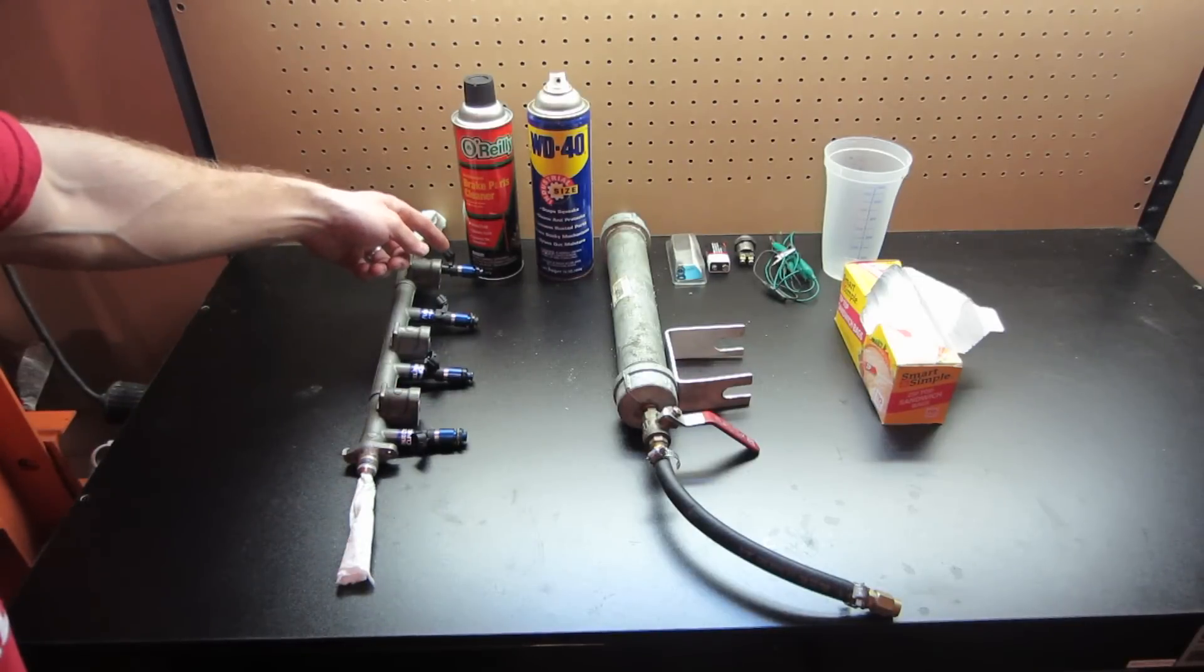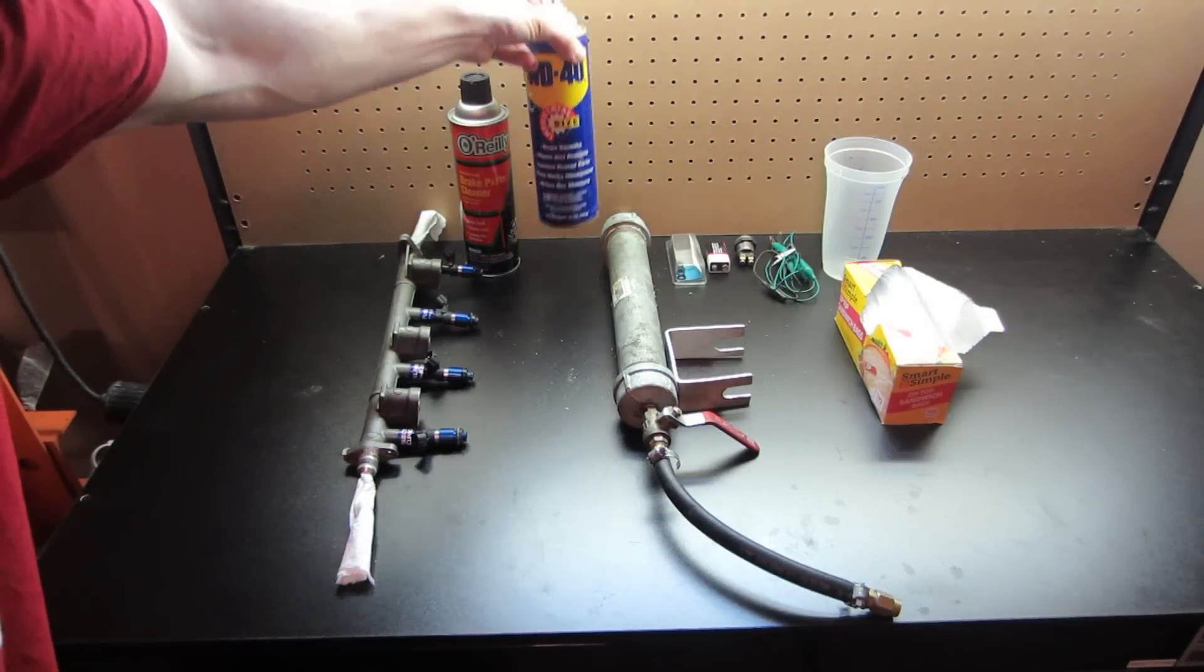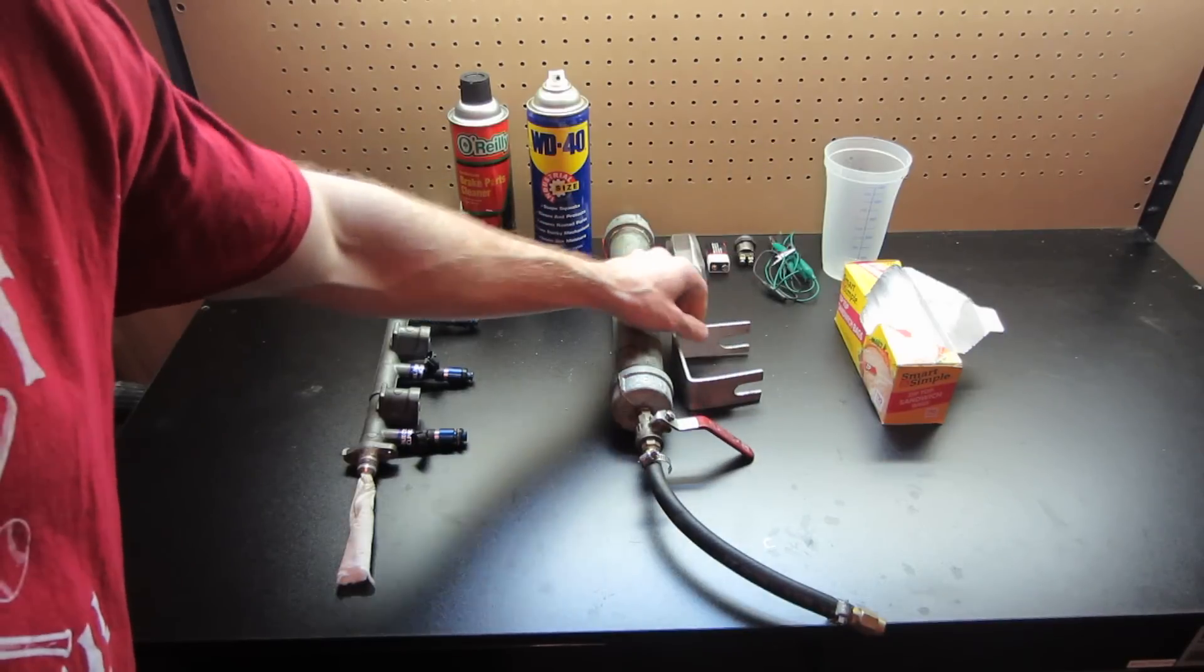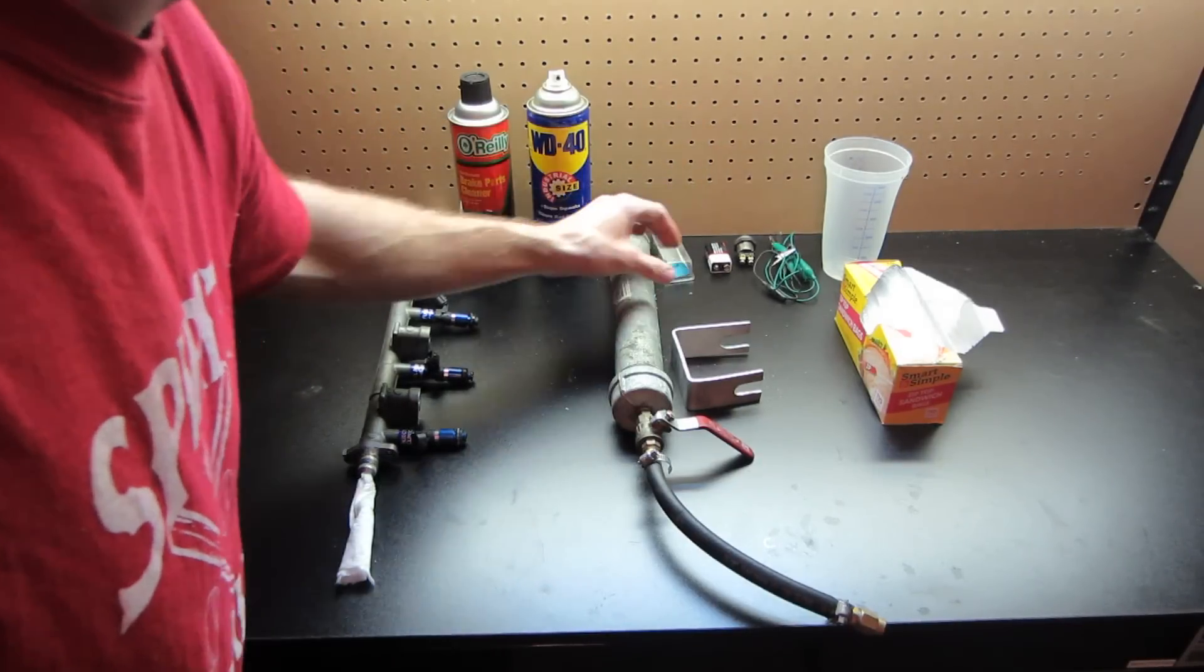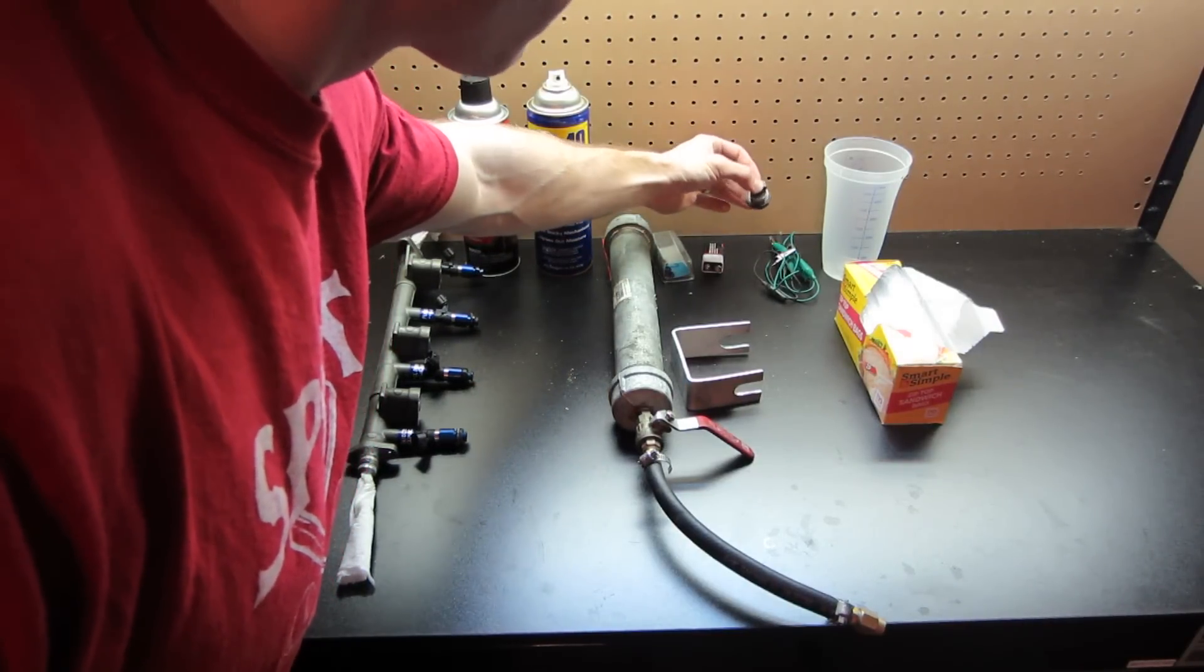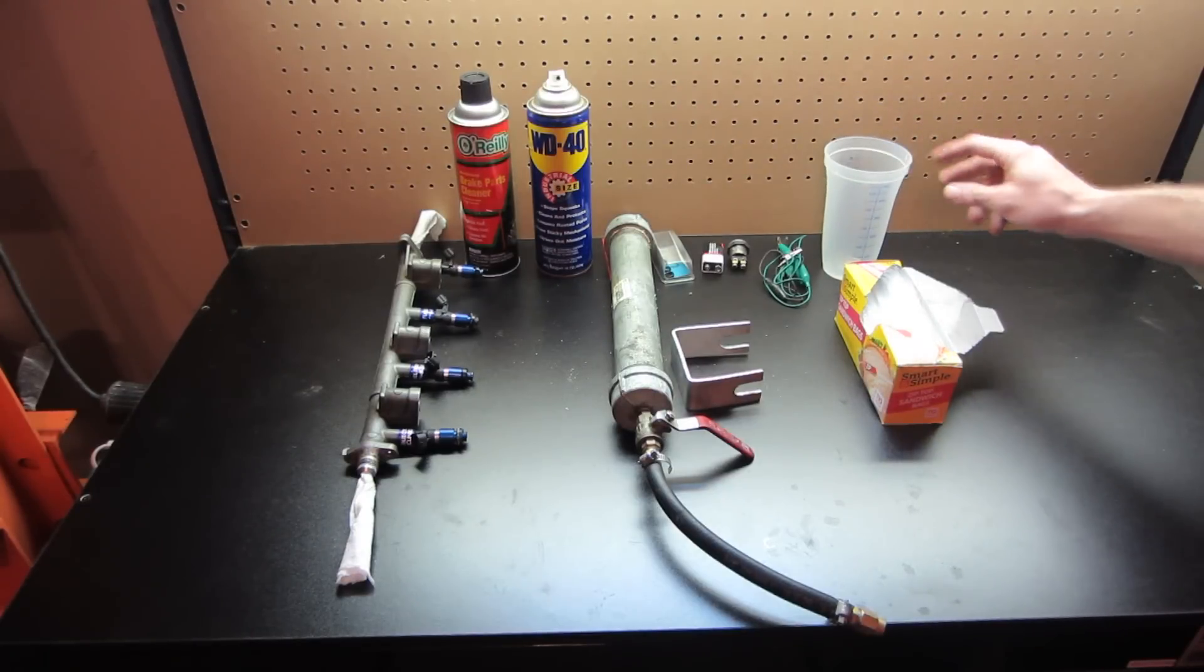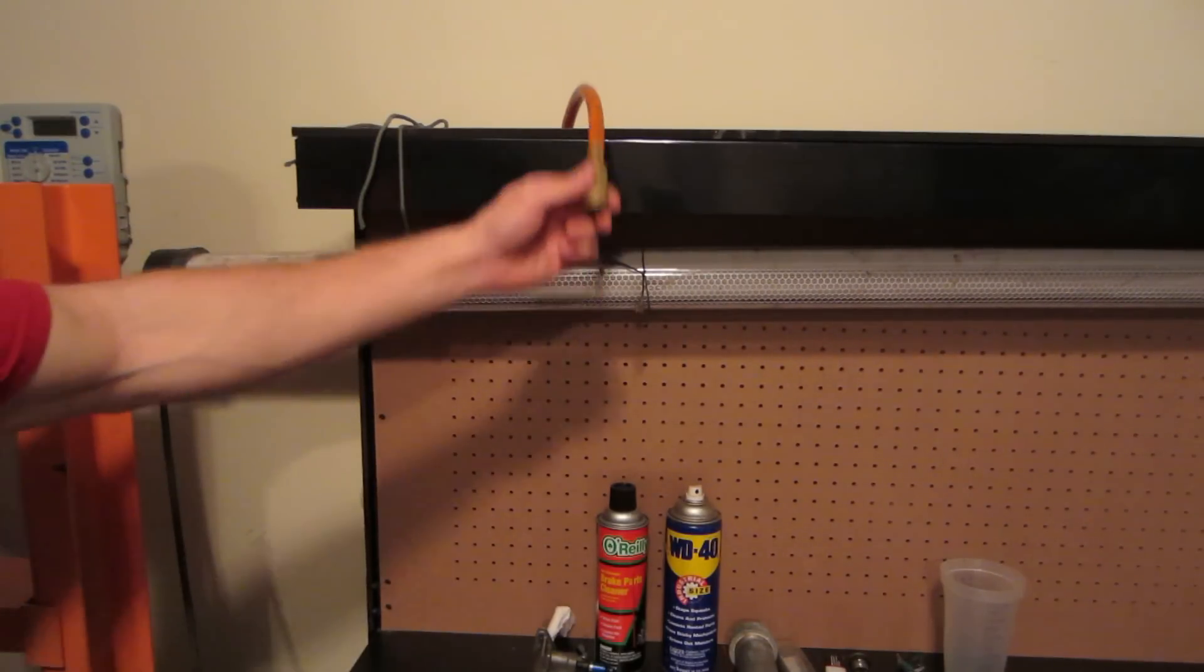Here I have my injectors, some non-chlorinated brake cleaner, WD-40, this homemade injector cleaner, a retaining bracket, some number 78 O-rings that seal the injector to the tool, a 9-volt battery, a push button, some alligator clip leads, a collection container, some Ziploc bags, and your air source regulated to 20 PSI.